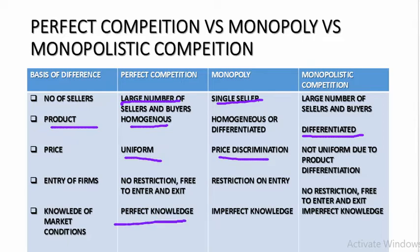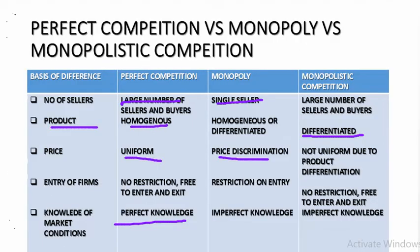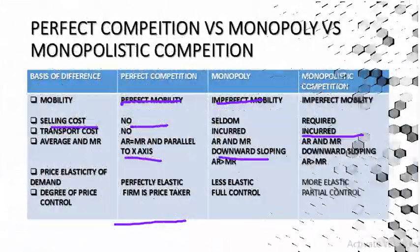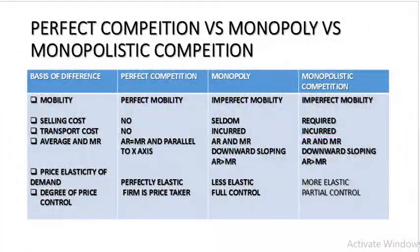Under perfect competition, both buyers and sellers have perfect knowledge. Under monopoly, there is imperfect knowledge — the buyer may have some knowledge but it is not perfect. Under monopolistic competition, there is also imperfect knowledge. Under perfect competition, there is perfect mobility. Under monopoly, there is imperfect mobility. Under monopolistic competition, there is also imperfect mobility.